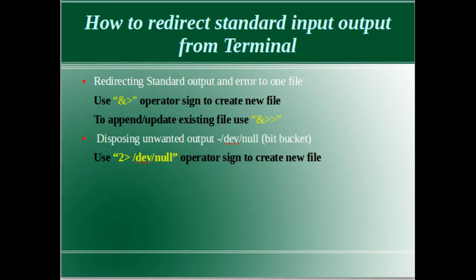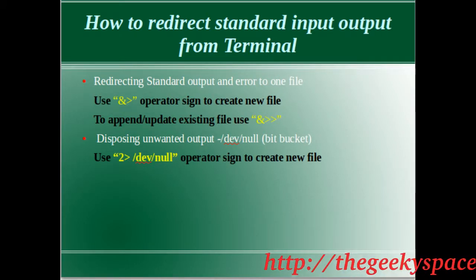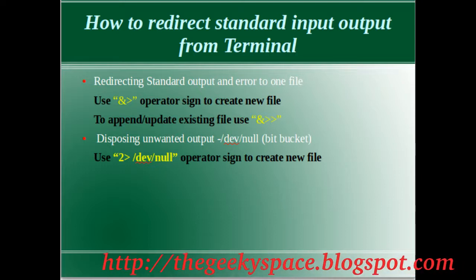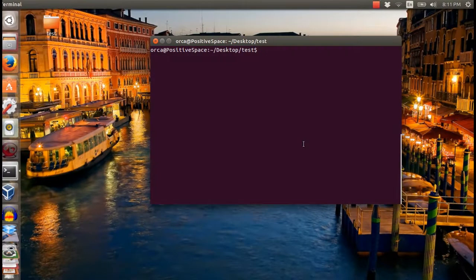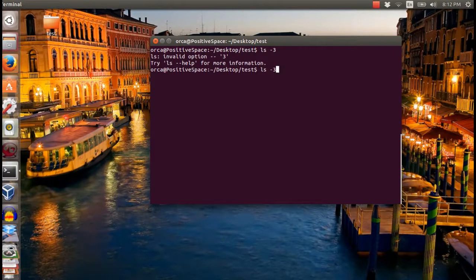The last tip I want to share in this tutorial is how to dispose of unwanted output streams. On a Unix or Linux system, there is a special file called dev null. Whatever is printed to the file, it will disappear without any trace. The main use of this file is when there is a program and the user wants to throw away either the regular output or the error messages. Dev null is also known as a bit bucket or black hole. To dispose of unwanted output streams, redirect the input output to the dev null file. In this example, I redirect the error to the dev null file.